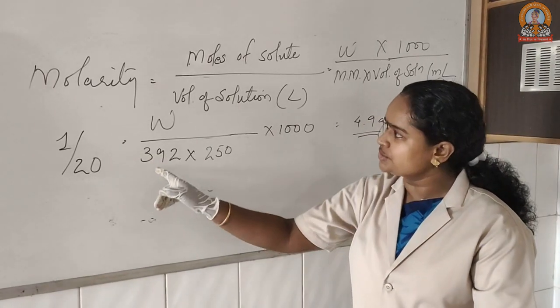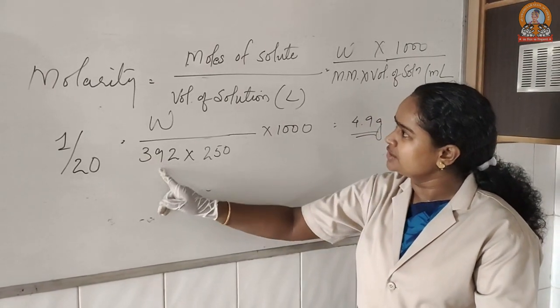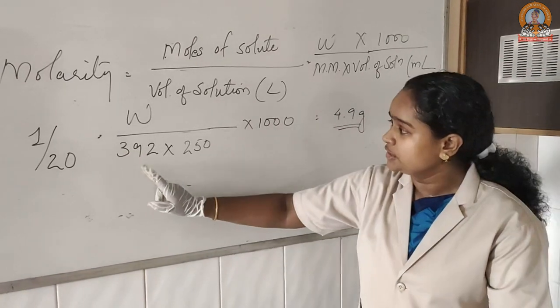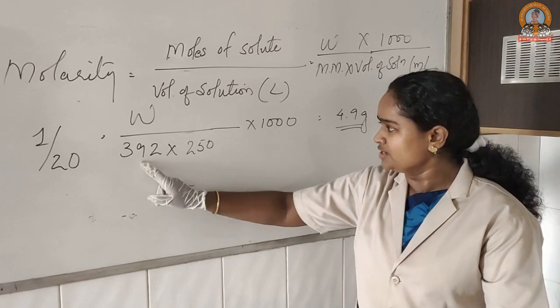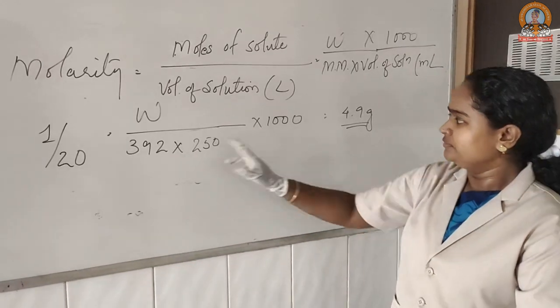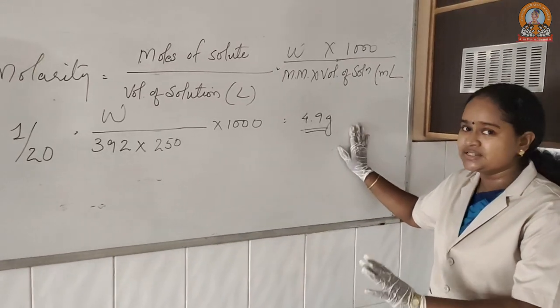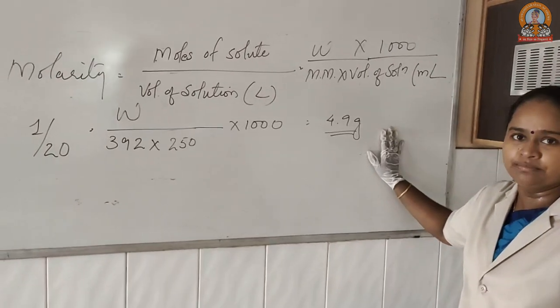When we plug in the values, 392 is the molar mass of Mohr's salt. After plugging in all the values, we get our required mass as 4.9 grams.